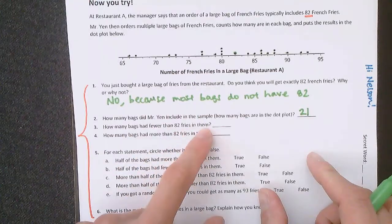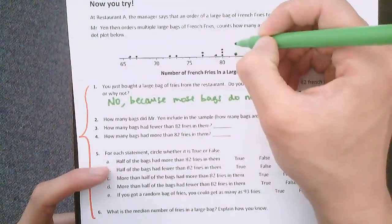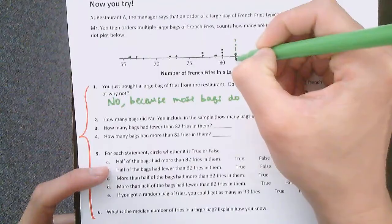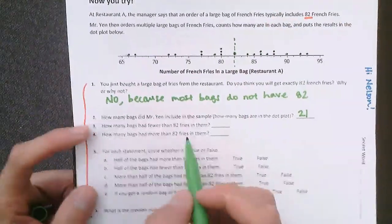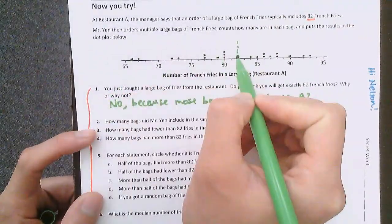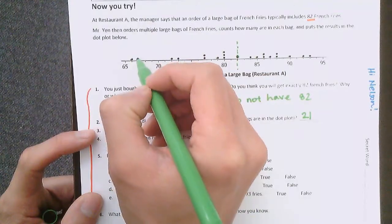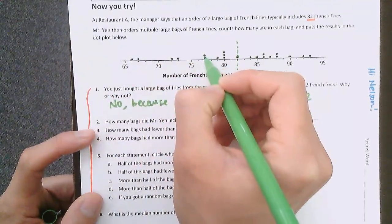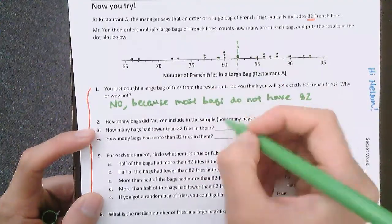So how many bags have fewer than 82? 82 is right here. So all the bags that have fewer than 82 would be all of these. We can count them. 1, 2, 3, 4, 5, 6, 7, 8, 9, 10.